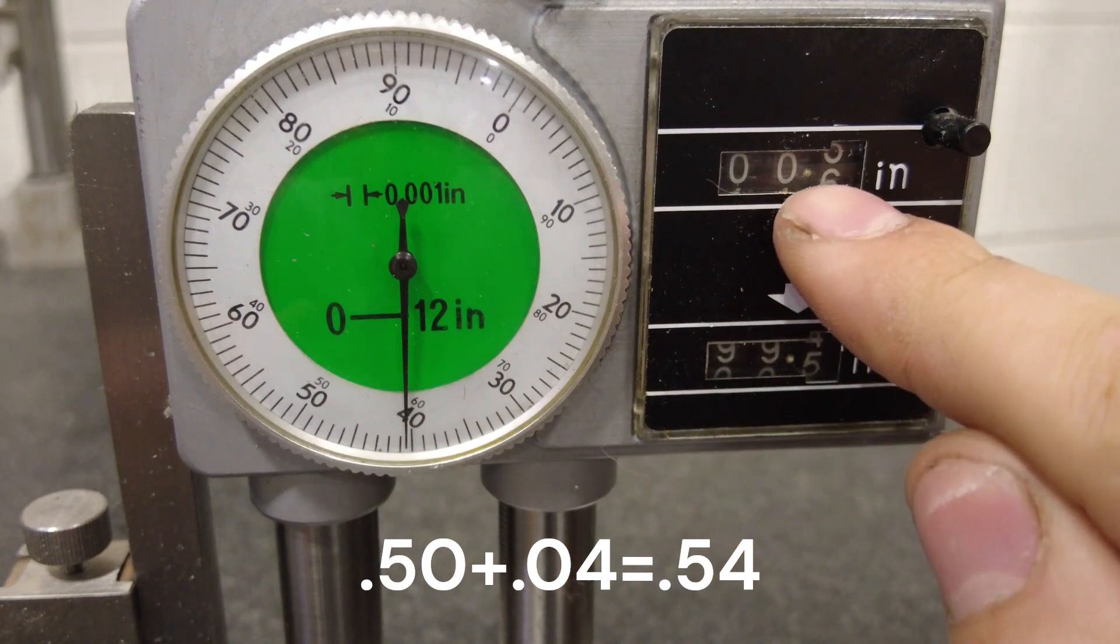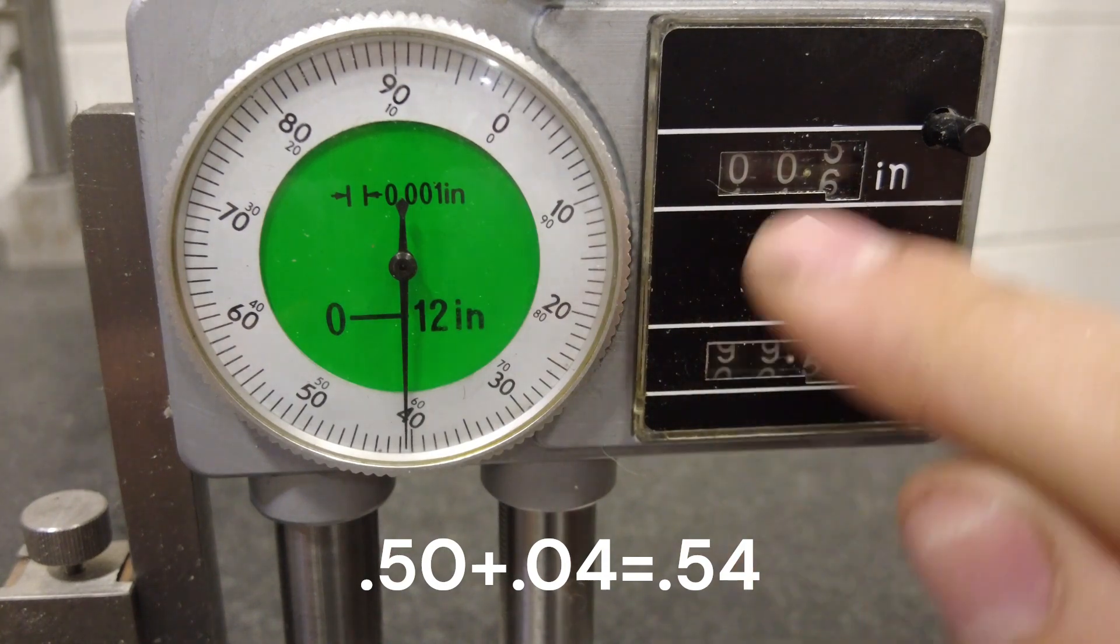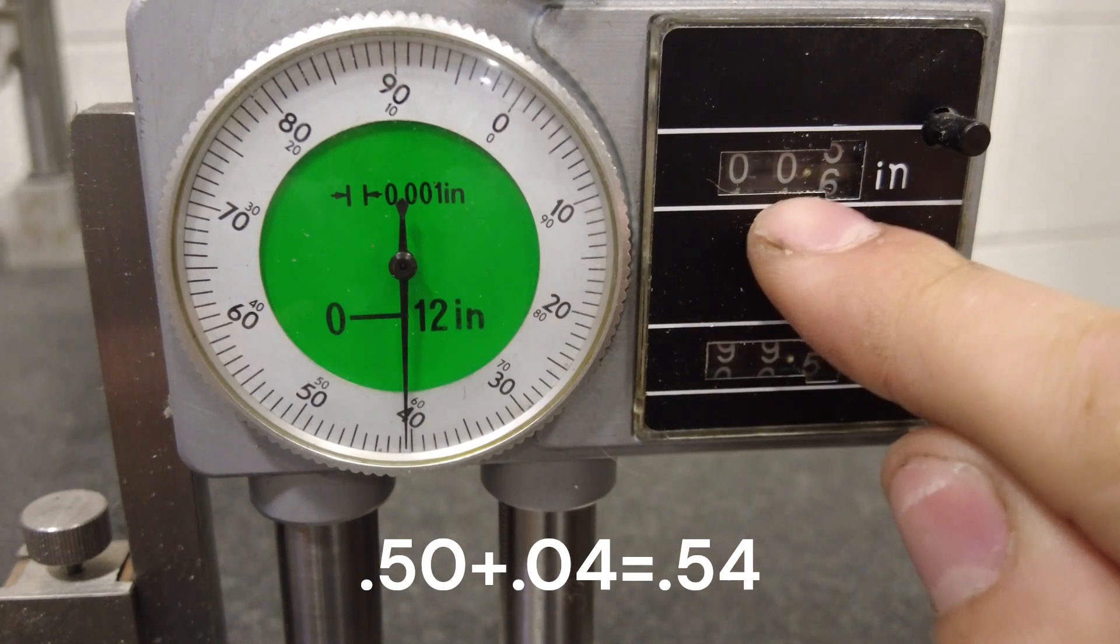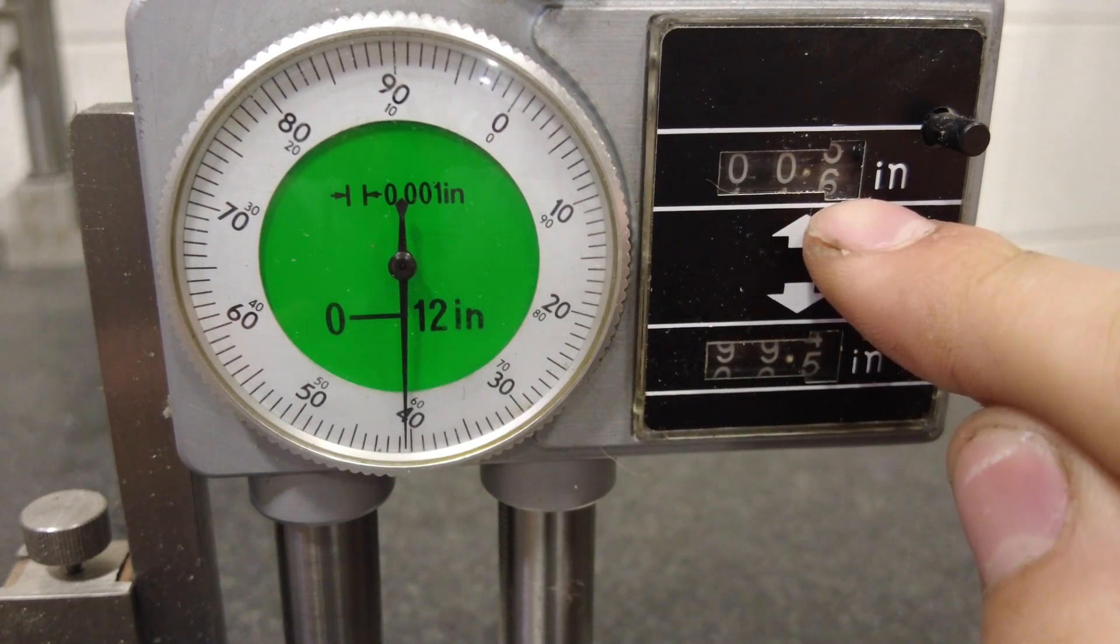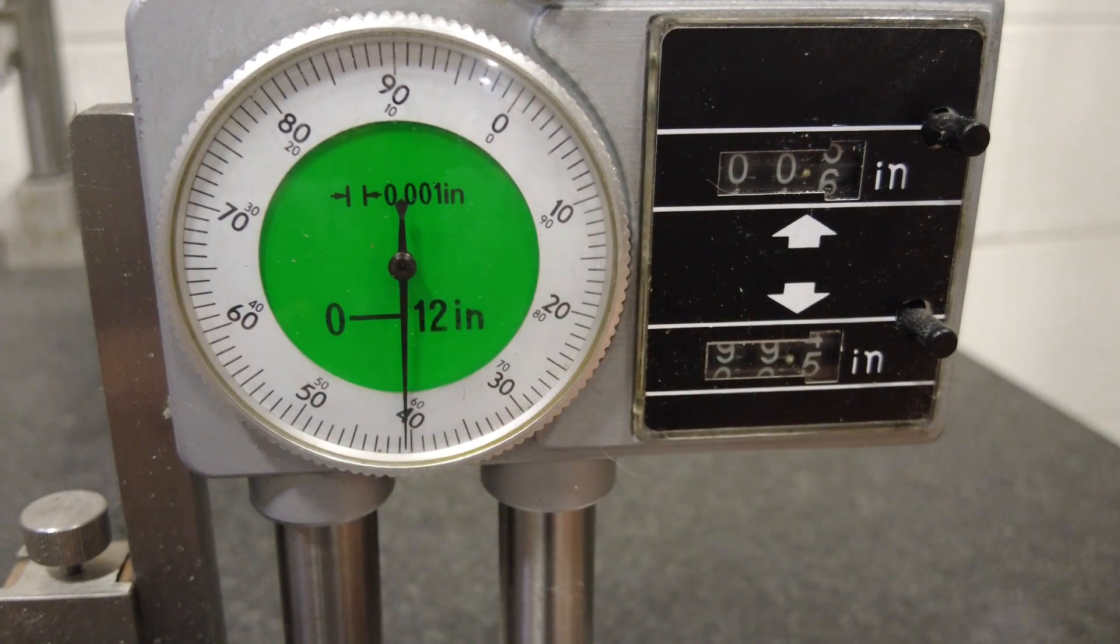Again, you're going to add this number, the 0.5, with this 40, so 0.54. Your first number is going to be your inches, then you have 100 thousandths, 10 thousandths, and thousandths. Those are these little lines. That's how to read a dial height gauge.